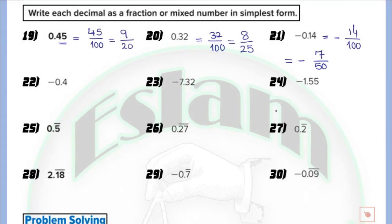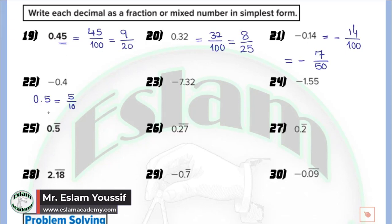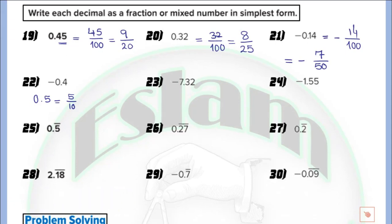In question number 25, we have 0.5 repeating. The difference between a normal decimal and a repeated decimal: for 0.5 without repeating the denominator is 10; two digits gives 100; three digits gives 1000. But for a repeating decimal, the denominator becomes 9, 99, 999 and so on. If one digit repeats, the denominator is 9; two digits repeating gives 99. Since there is no whole number and only one digit at the right of the decimal, we write 5 over 9. So 0.5 repeating equals 5 over 9.